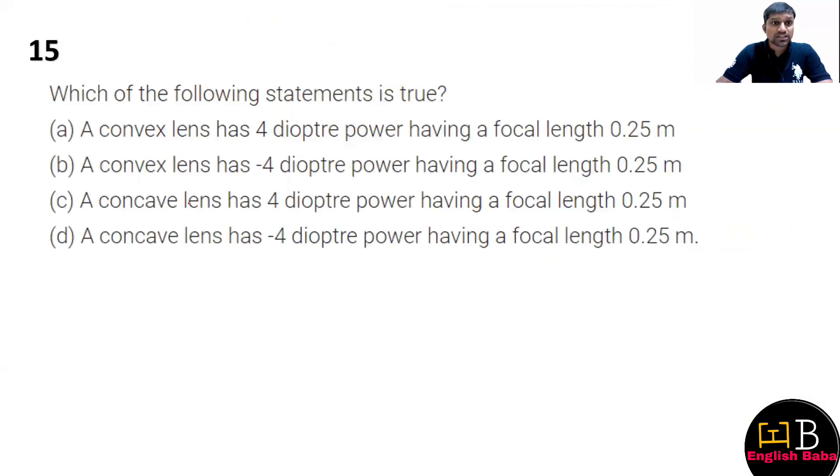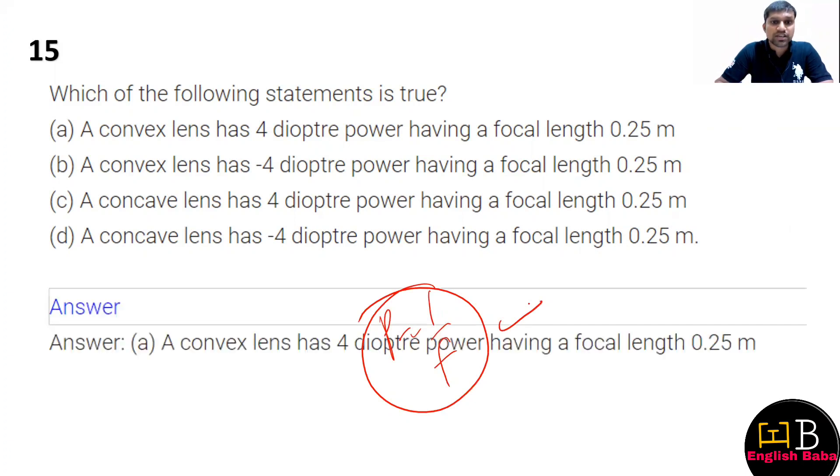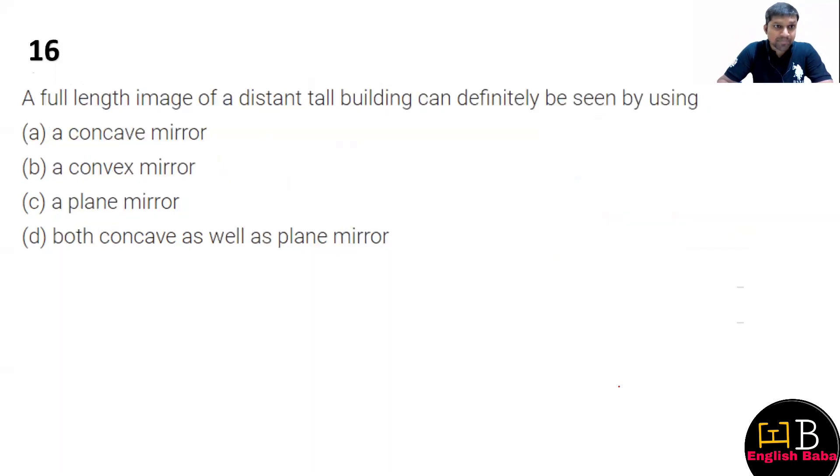Next question: which one of the following statements is true? You know the power formula is one upon focal length, so try to find out which statement is correct. The correct statement over here is option A. One by four will be 0.25 meter. Please remember, the focal length you take should always be in meters.